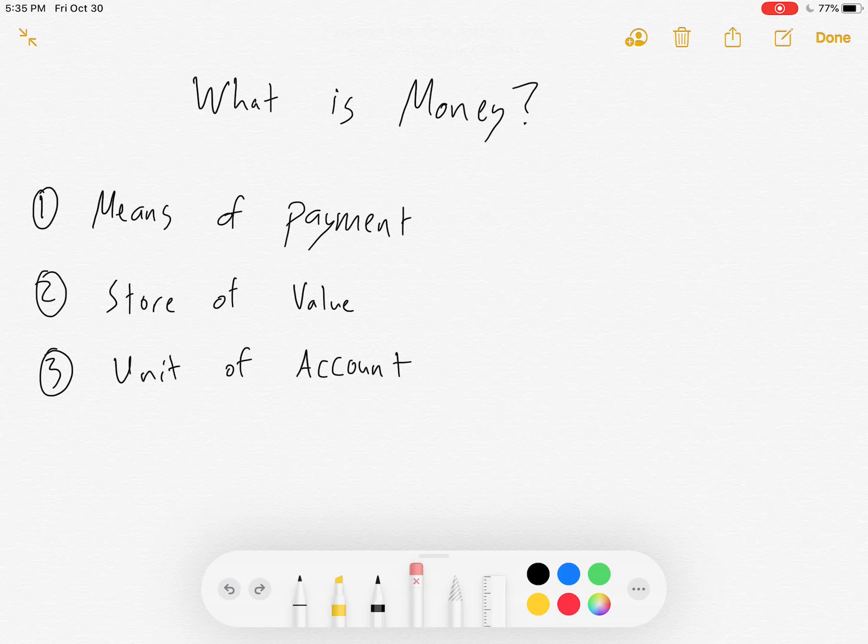But let me explain a little bit of why we like money. One, a means of payment. This facilitates economic transactions. For instance, if I were a dairy farmer and I wanted to hire an accountant to do my taxes, if we didn't have money, I would have to find some way to convince this accountant to trade some milk for accounting services.